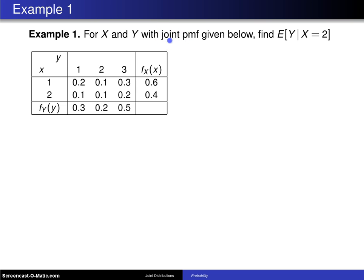Since it is a joint probability mass function, we know that x and y are discrete random variables, which means we'll be doing a summation to find the expected value of y given x equals 2.